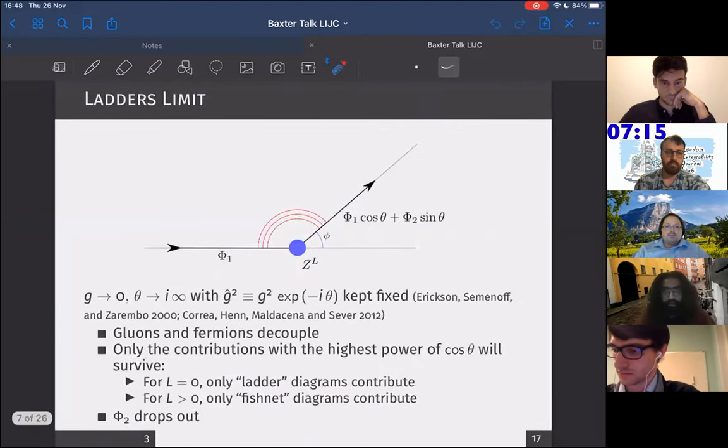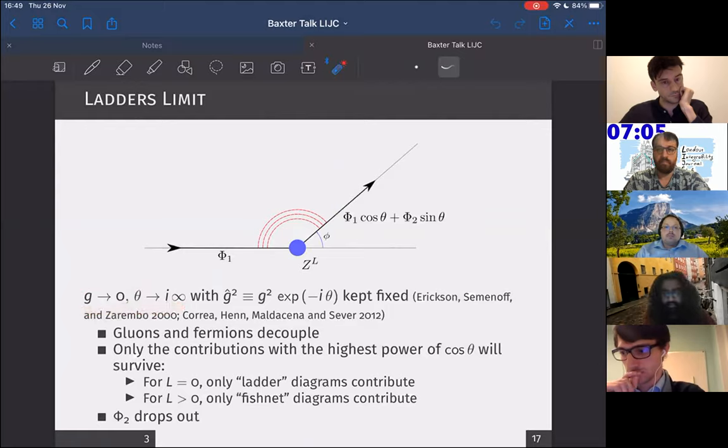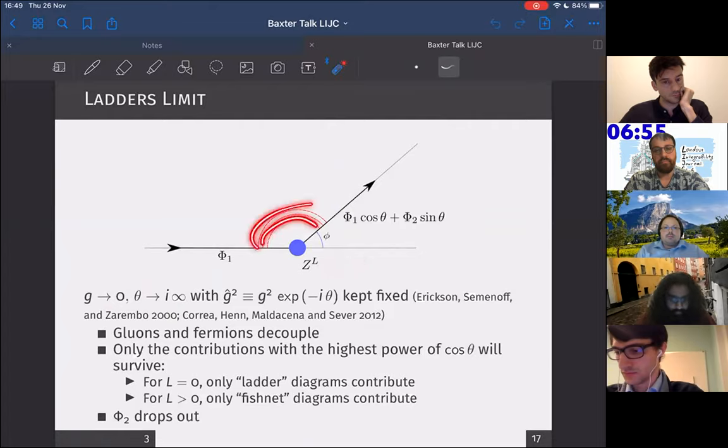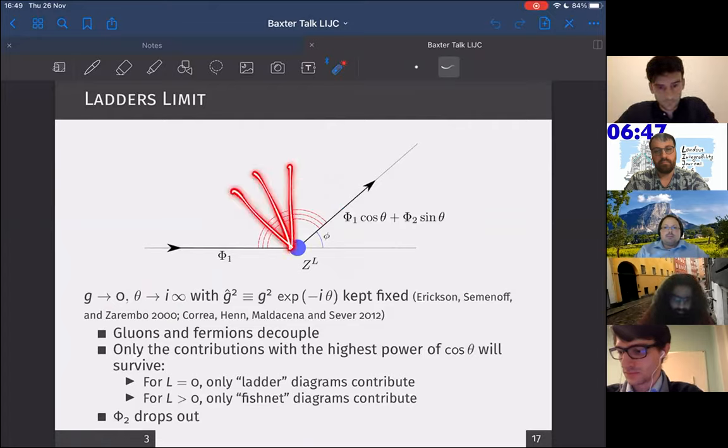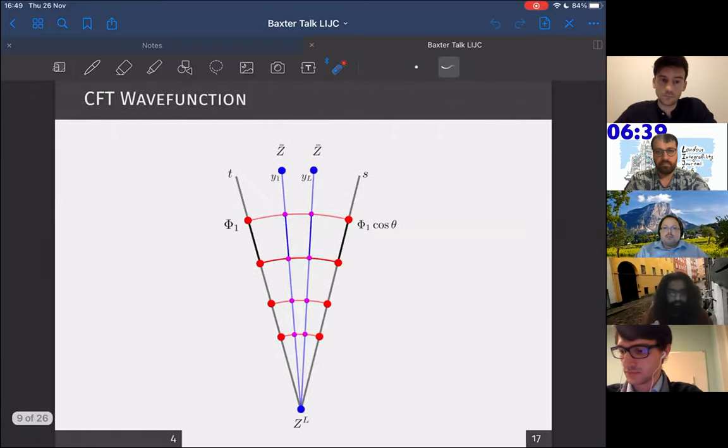This is the reason why cusps are interesting. In particular, I will be in what's known as the ladder limit. The ladder limit is obtained when you take the coupling G to zero and analytically continue the angle theta to i infinity in a particular way so that a particular combination of them is kept fixed. In this limit, in the case I have no orthogonal insertions, only ladder diagrams can contribute, only ladder Feynman diagrams contribute. But in the case where I do have scalar insertions, then I have what are known as fishnet diagrams.